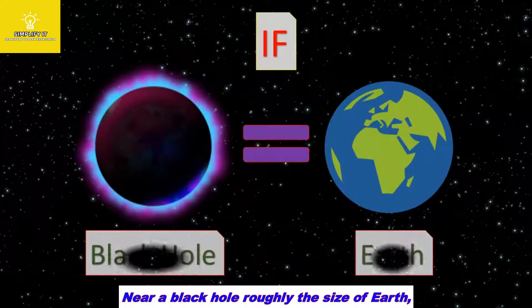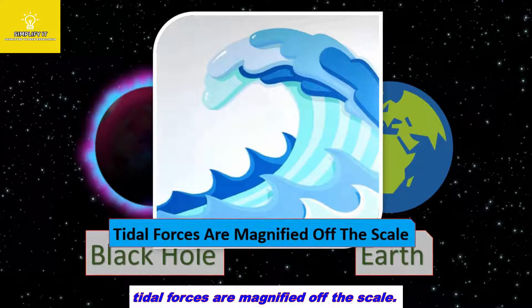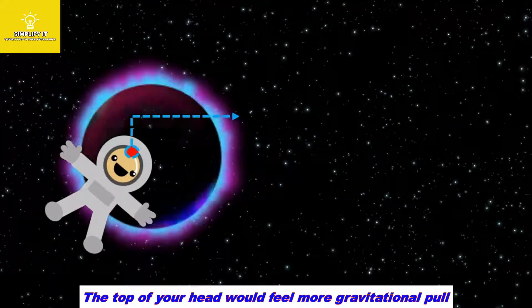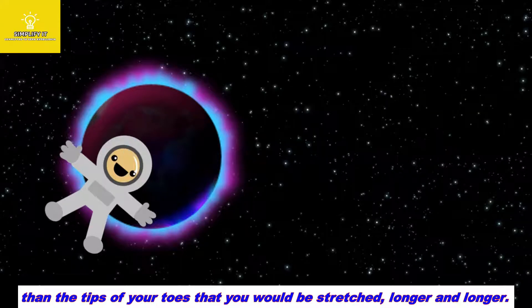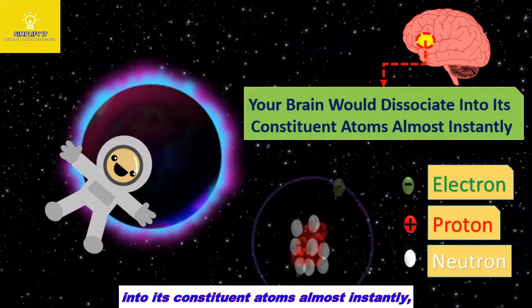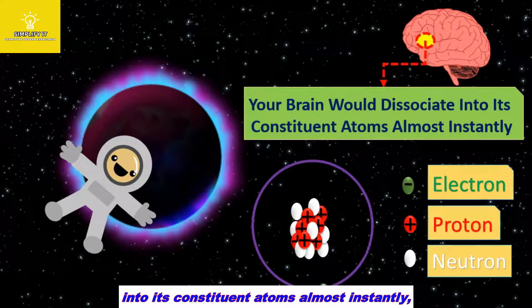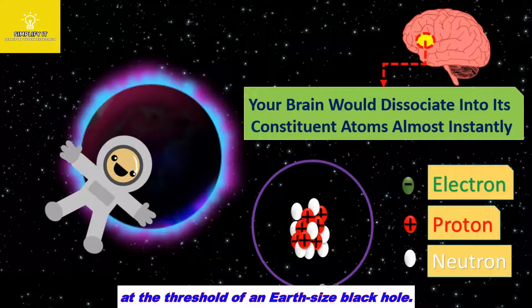Near a black hole roughly the size of Earth, tidal forces are magnified off the scale. The top of your head would feel more gravitational pull than the tip of your toes. You would be stretched longer and longer because your brain would dissociate into its constituent atoms almost instantly. You would have little opportunity to soak in the scenery at the threshold of an Earth-sized black hole.